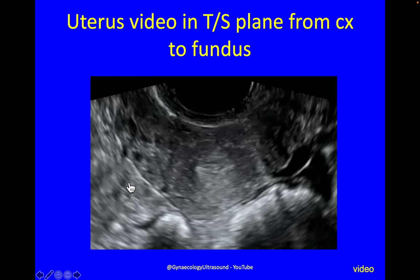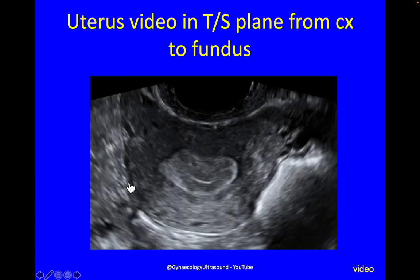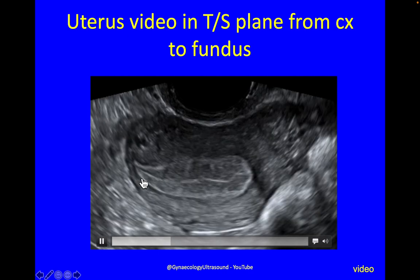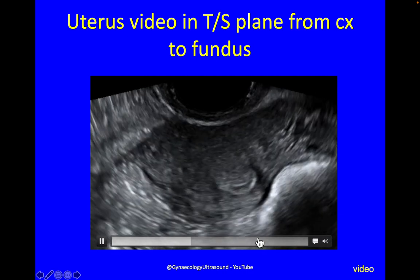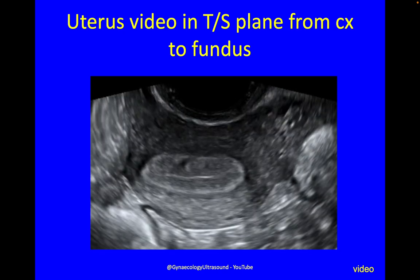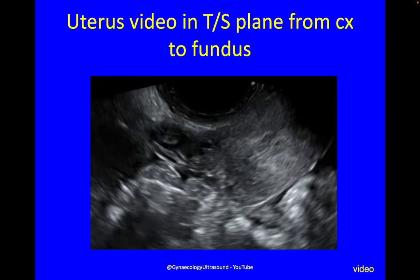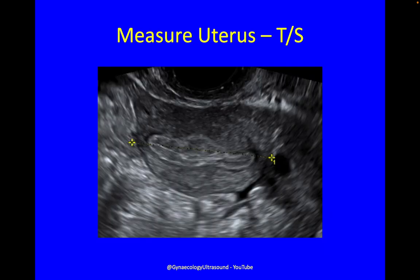Going transverse now onto the uterus, we look from cervix to fundus and back again. From cervix up to fundus, there's the interstitial portion of the fallopian tube, and there it is on the other side. Going from fundus down to cervix, looking at the endometrial cavity, making sure that it's regular and that the cavity remains one cavity near the fundus to determine the uterine shape. Once you know your contours and widest part, you can measure the uterus from side to side — a width measurement at its widest part.